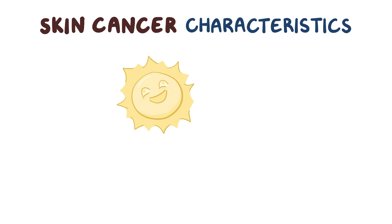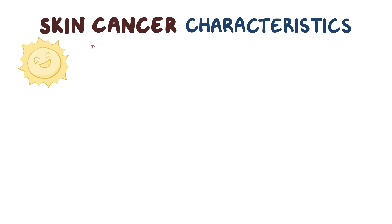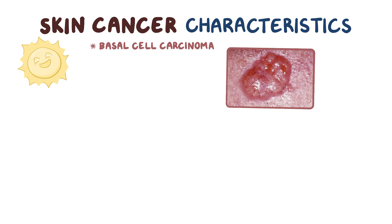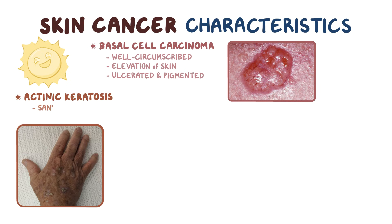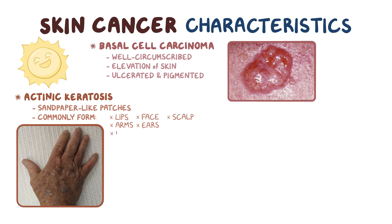Skin cancer typically appears on skin that's exposed to the sun. Basal cell carcinomas can appear as well-circumscribed, pearly, waxy, or shiny solid elevations on the skin, and can also be ulcerated, red, or pigmented. Actinic keratosis can appear as dry, rough, almost sandpaper-like patches surrounded by tan, brown, red, or flesh-colored skin. They tend to commonly form on the lips, face, scalp, arms, ears, and the backs of the hands.